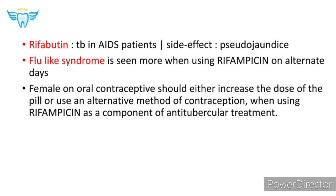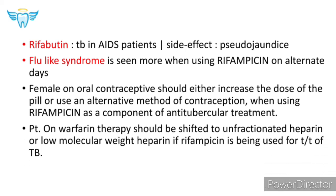Females on oral contraceptives should either increase the dose of the pill or use an alternative method of contraception, because rifampicin increases the metabolism of oral contraceptives. A patient on warfarin therapy should be shifted to unfractionated heparin or low molecular weight heparin if rifampicin is being used, for the same reason. Stay tuned for more videos and to continue with our 'One Drug in Three Minutes' series. Thank you.